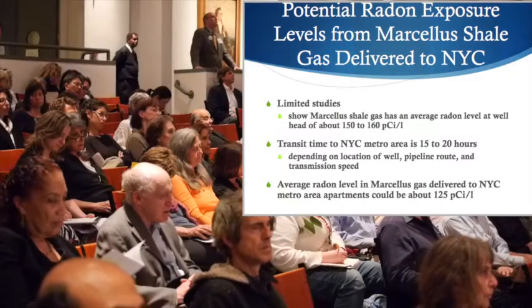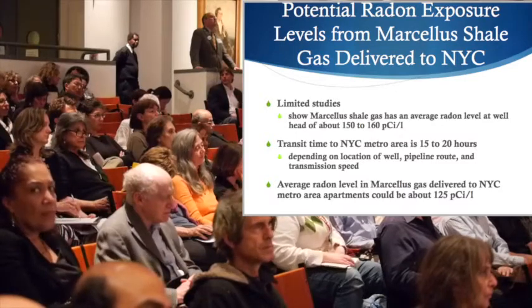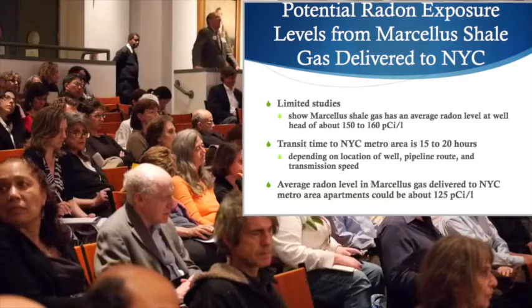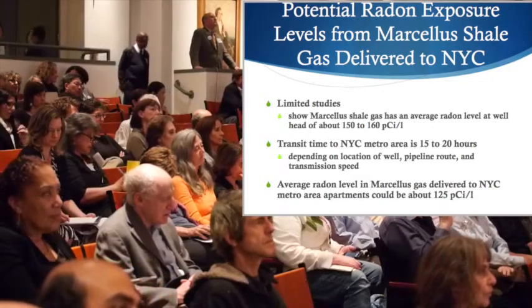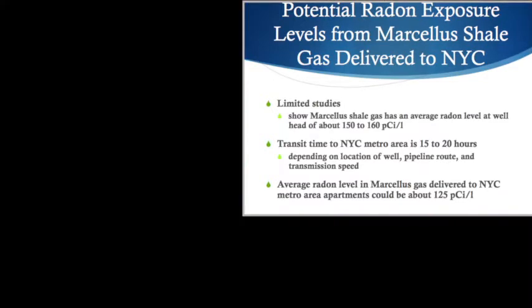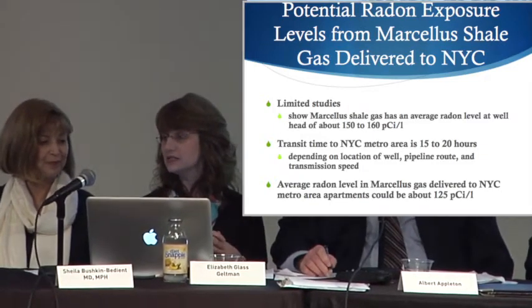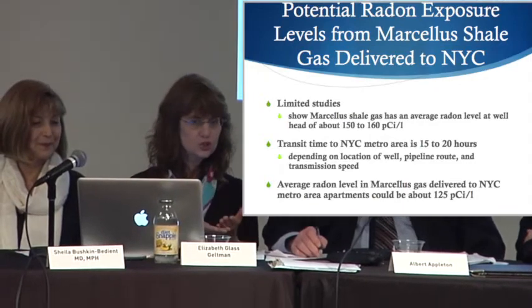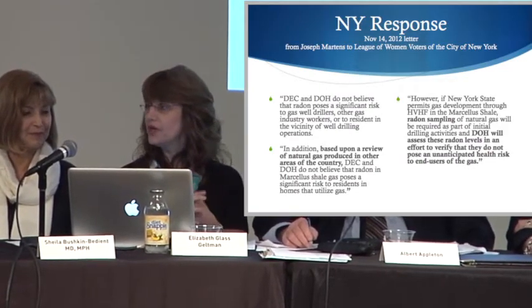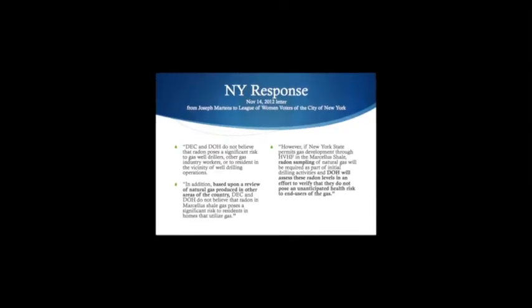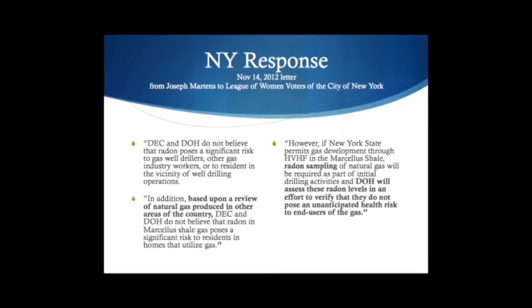We have very limited studies about the amount of radon coming out of Marcellus shale gas. In New York we have a moratorium, but in Pennsylvania, in the Marcellus region, they are already drilling. Figuring out how much radon is coming out of the wellheads is something that is knowable. Some recent hotly debated studies have shown radon levels of 150 to 160 picocuries at the wellhead, and using certain projections, that could translate to up to 125 picocuries per liter in New York City gas — compared to EPA's safe level of four and WHO's level of 2.7. Measuring radon at wellheads of frack sites is something exceedingly knowable; it just needs access.